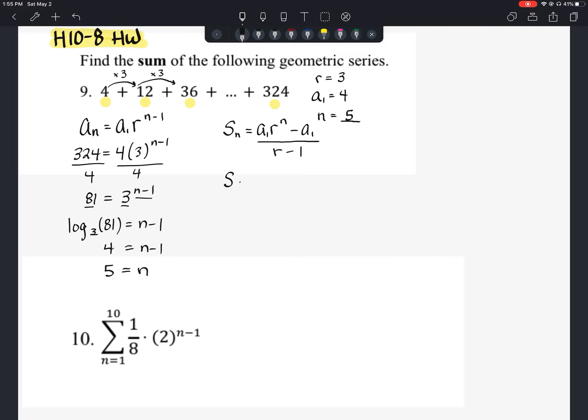So the sum of our 5 terms should equal 4 times 3 to the 5th power minus 4. And then we're going to divide that by 3 minus 1.